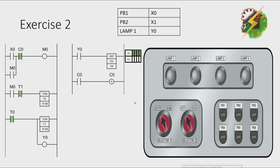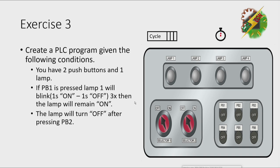Now let's go to our next exercise. Exercise 3. Create a PLC program given the following conditions. You have two push buttons and one lamp. If PB1 is pressed, lamp 1 will blink three times.